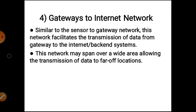Next layer is the fifth layer: data integration and information processing. In this layer, the raw data collected from the previous four layers is converted into meaningful information. The data in most cases is stored in cloud storage and accessed through the backend system of a mobile app or web application. The integrated data is processed via advanced analytics and other processing systems into value-added information, which is then displayed on the screen of the user.